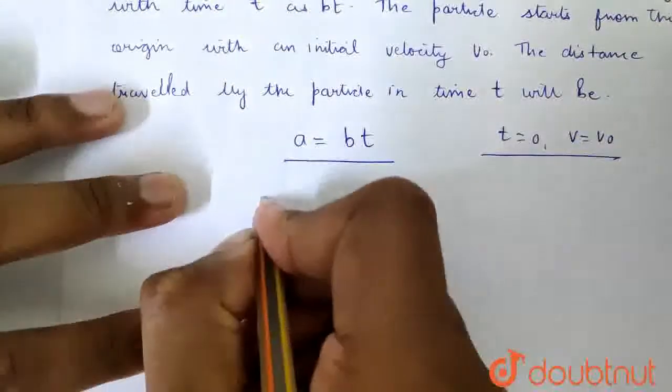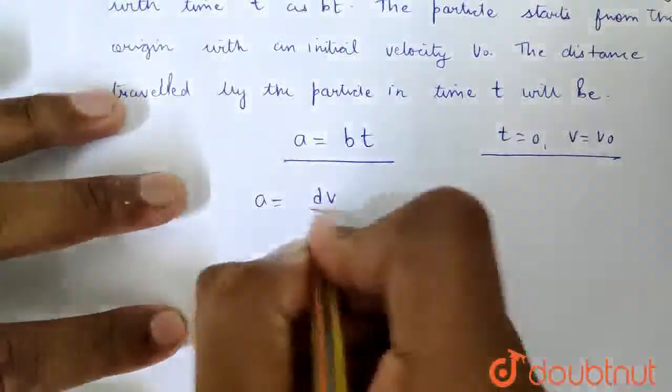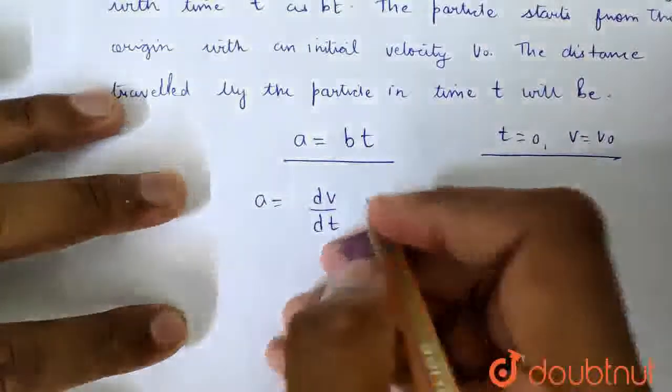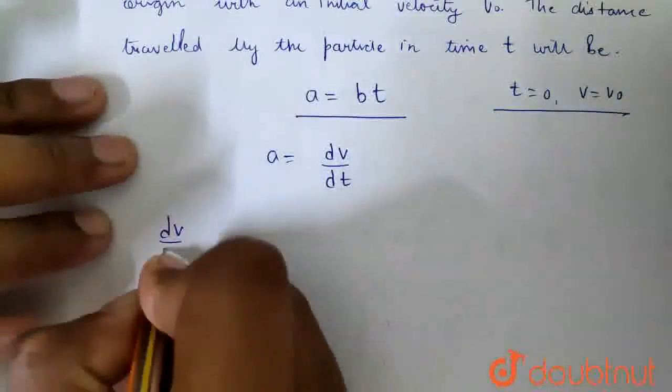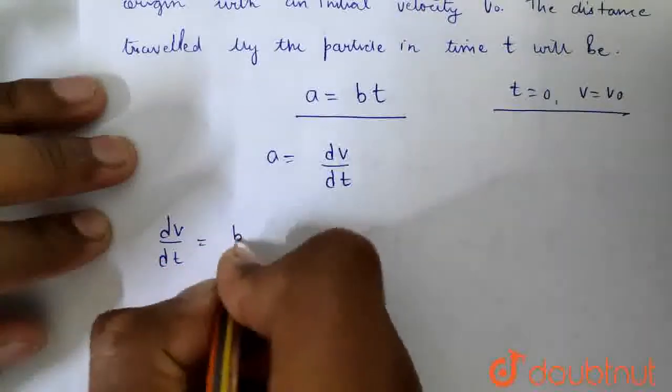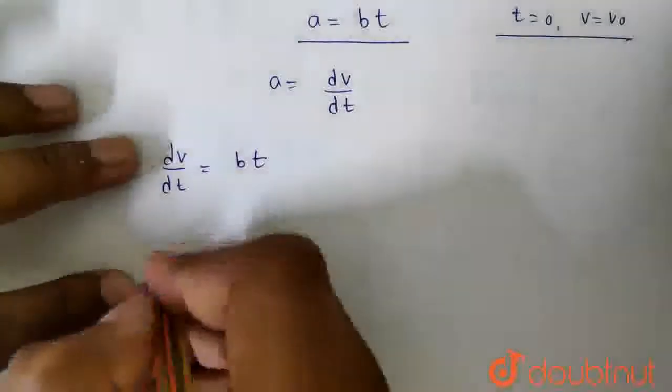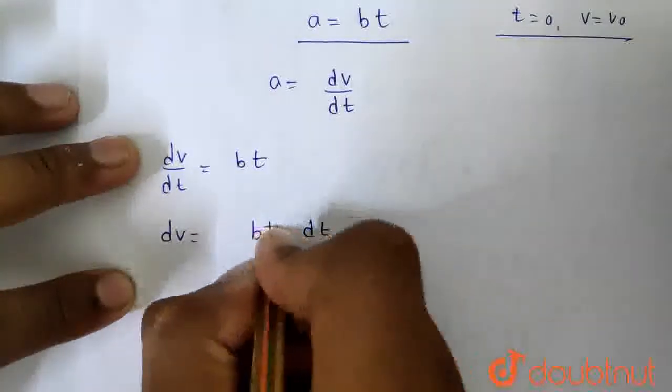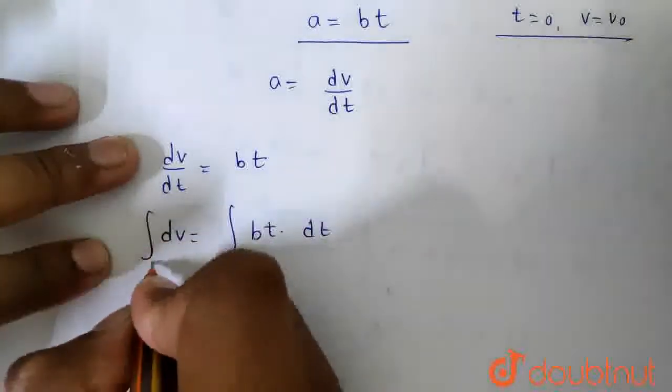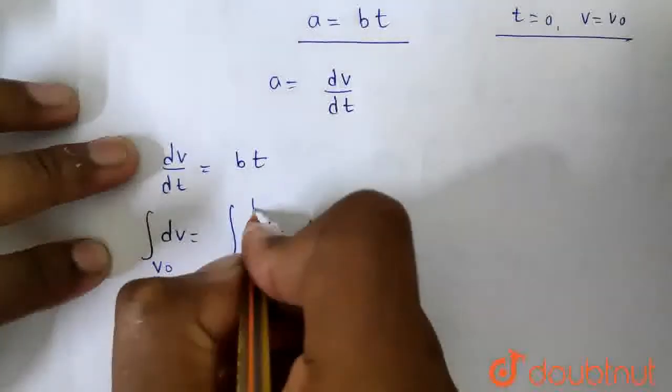We know that acceleration is dv by dt. So I can write dv by dt is equal to bt. So dv will be bt into dt. If we integrate from velocity v0 initially at time 0 to velocity v at time t.